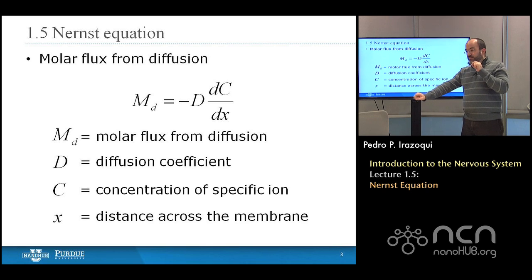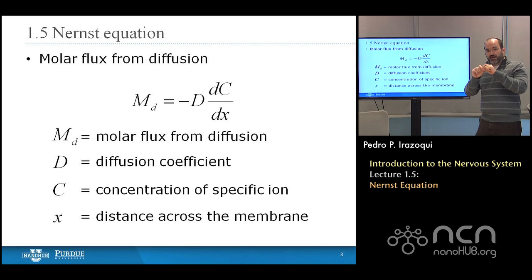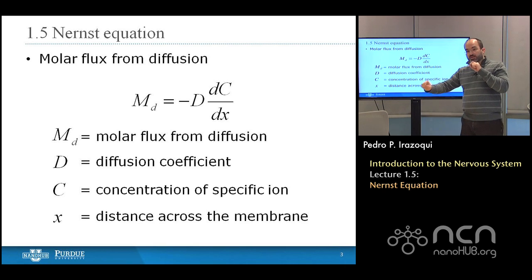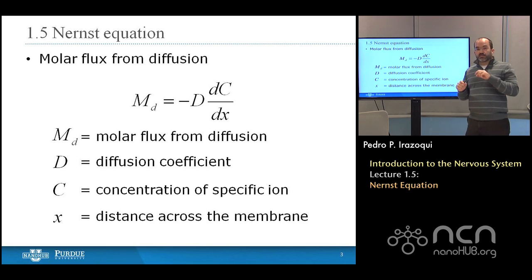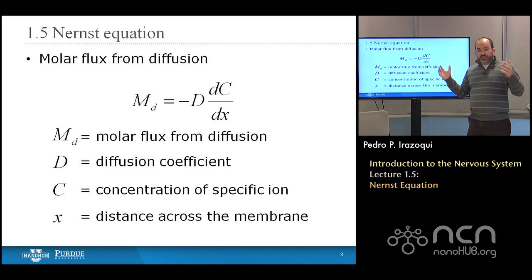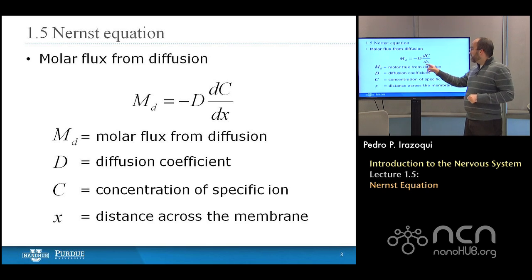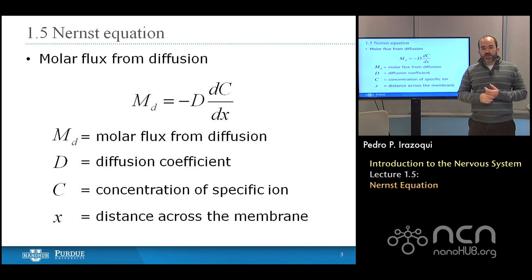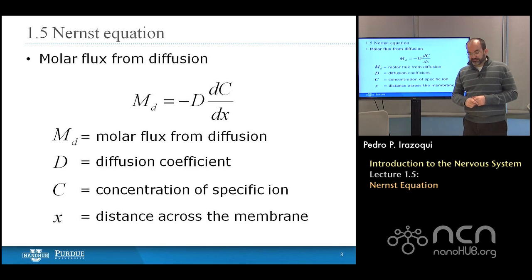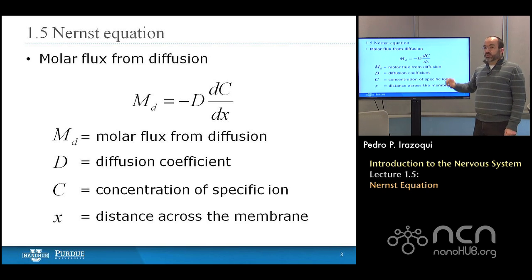So you have a negative number, and yet we know that the flux — the flow of those ions — is going to go from high concentration to low concentration. So if the flux is going to be positive when we're going from high concentrations to low, when we have a negative slope, then we need to introduce this minus sign to give us a positive flux for a negative derivative. So we plot the concentration as a function of position inside to outside of the cell, take the negative derivative of that concentration with respect to position, and multiply by the diffusion coefficient, which describes the ease with which the ions diffuse in that medium. This equation describes the molar flux from diffusion.